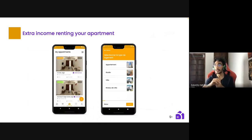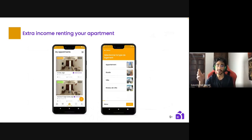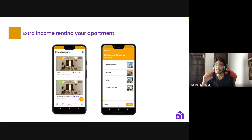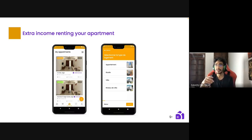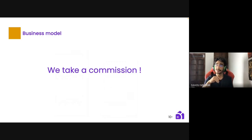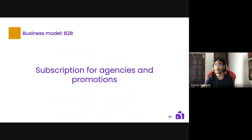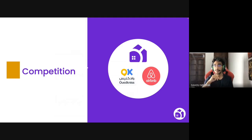For hosts, you can add as many apartments as you want. Our agent will verify and check each apartment to confirm it matches the listed specifications. Adding an apartment is easy — you simply check and click the specifications appropriate for your property, such as type, address, and other details. For our business model, we take a commission from B2C clients on each reservation, and for businesses — especially agencies and real estate promoters — we charge a subscription fee.